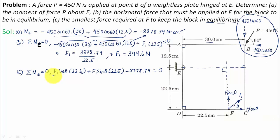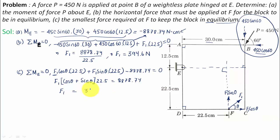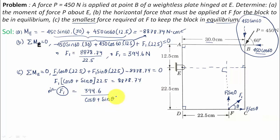Separating F1: F1 times (cos theta plus sin theta) times 22.5 equals 8878.74, so F1 equals 394.6 divided by (cos theta plus sin theta). Since we want the minimum value of F1, we need the maximum value of the denominator (cos theta plus sin theta). To find that maximum, we differentiate with respect to theta and equate to zero.